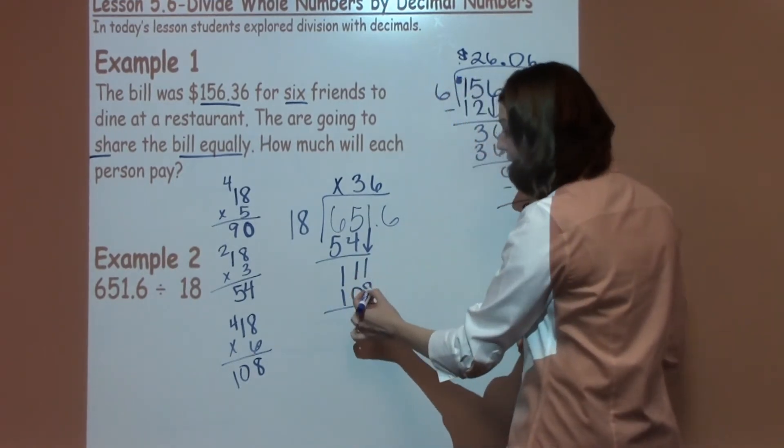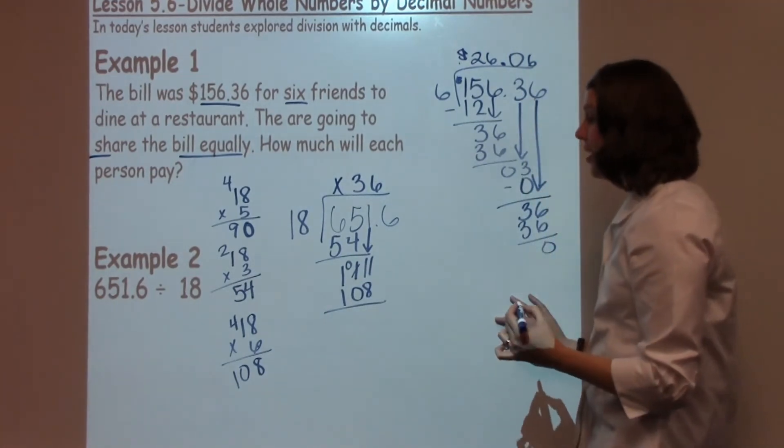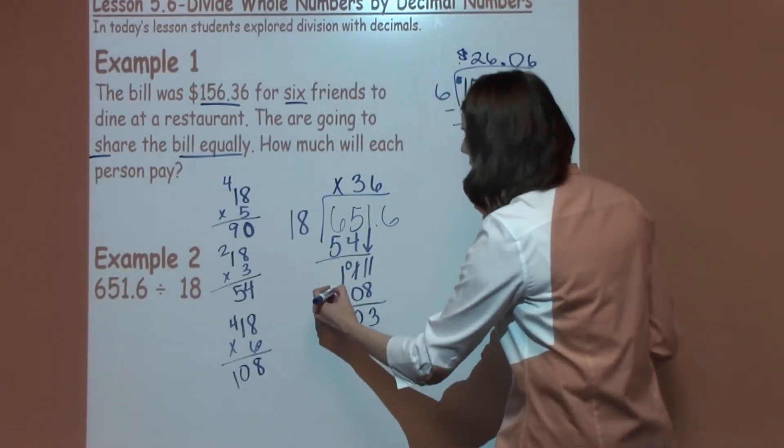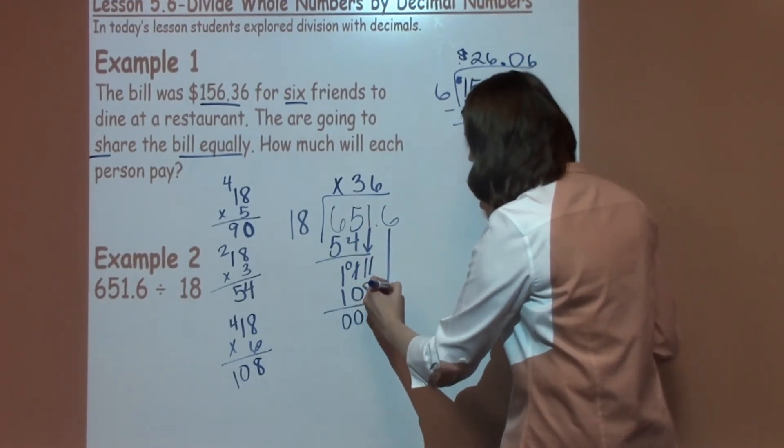When I subtract these, one minus eight I cannot do, so I'm going to borrow. Now it becomes eleven minus eight, which is three. Zero minus zero is zero, one minus one is zero, bringing down my last number, which is a six.